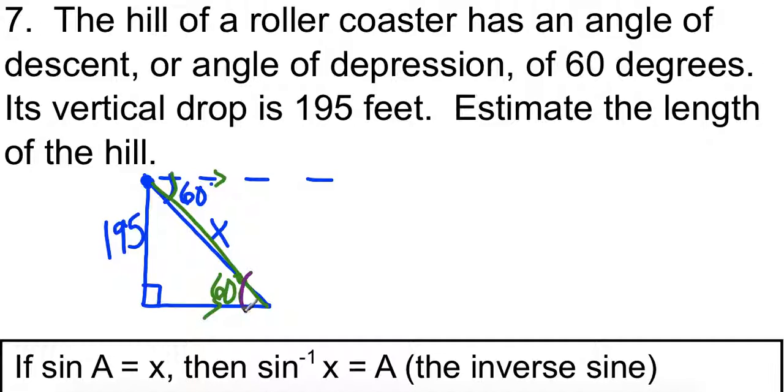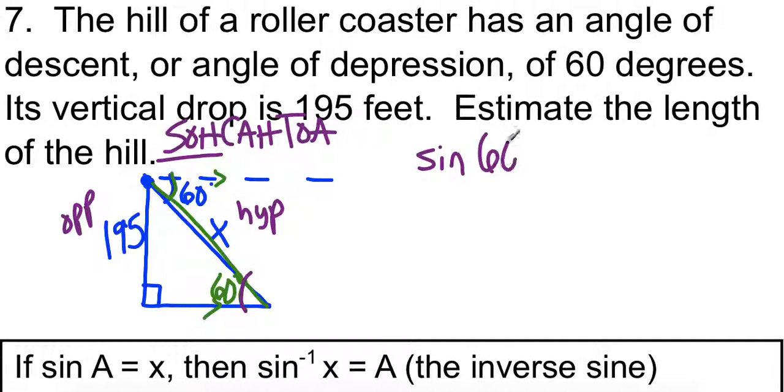Okay, so now going from this 60 degree angle that is actually in our triangle, we have an opposite and we have a hypotenuse. So when I think about SOHCAHTOA, I am looking for the one that has opposite hypotenuse, which is going to be sine. So I'm going to write that the sine of the angle, the sine of 60 degrees is opposite over hypotenuse.